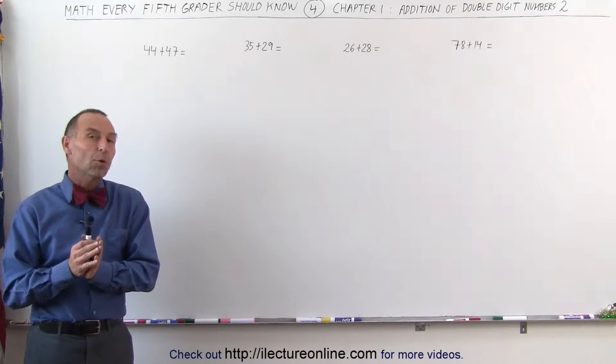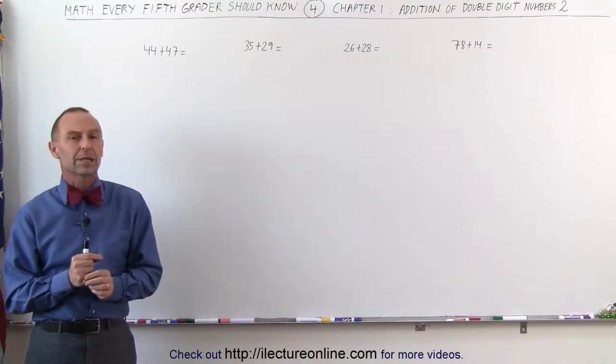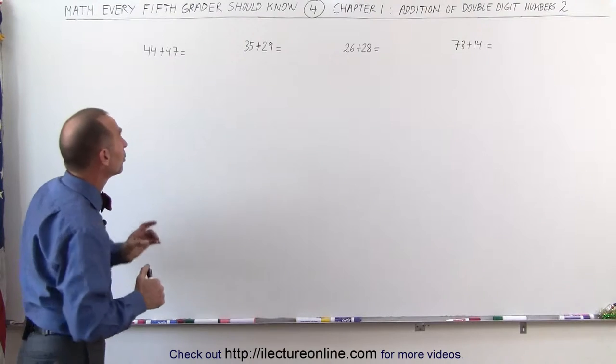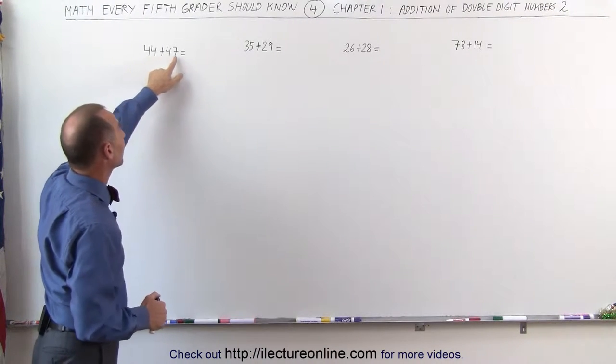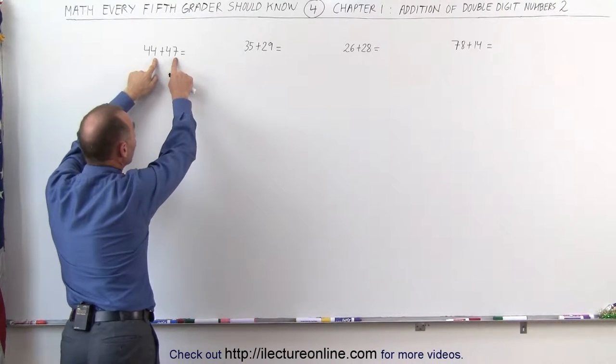Welcome to ElectronLine. As it always is in math or science, whenever you do problems, you have to recognize what we're dealing with here. We're adding double-digit numbers, but in this case, what you will notice is if you look at the last two digits, when you add those together, you get a number bigger than 10.